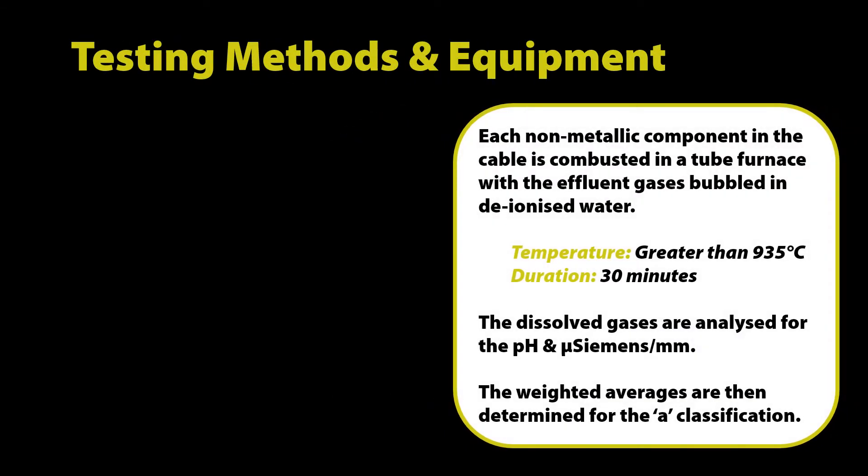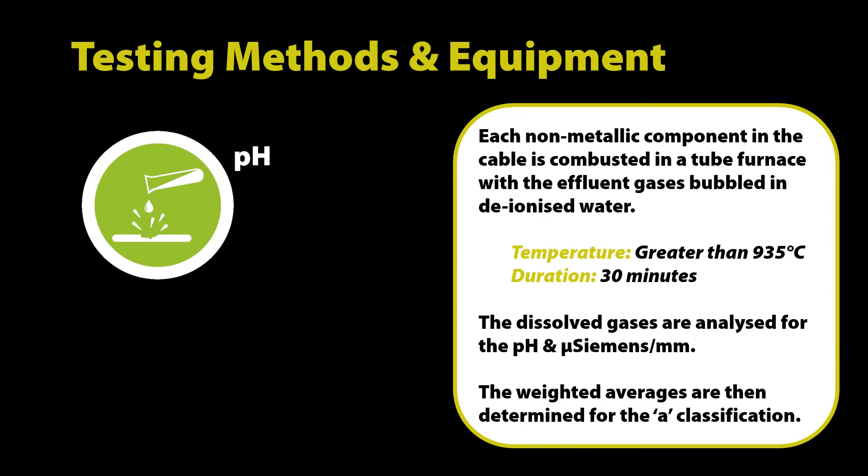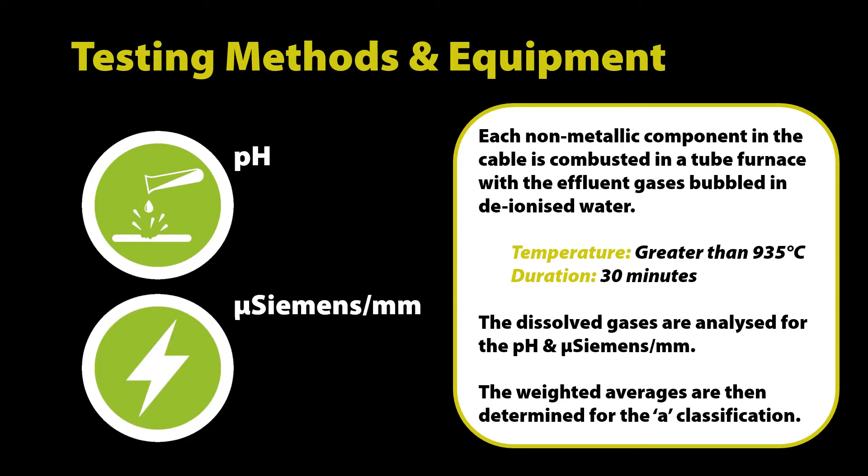This slide describes the test methods and equipment used to look at two important elements which are acidity or corrosiveness of the gas by way of a pH measurement and the conductivity which is the ability of the dissolved solution to conduct electricity. Conductivity is also directly linked to the total dissolved solids in the solution and is expressed as microsiemens per millimeter.